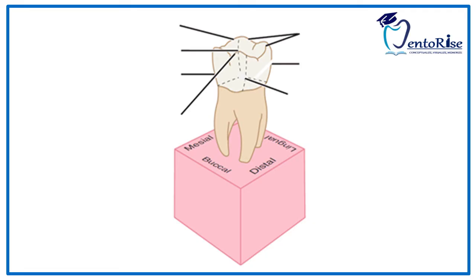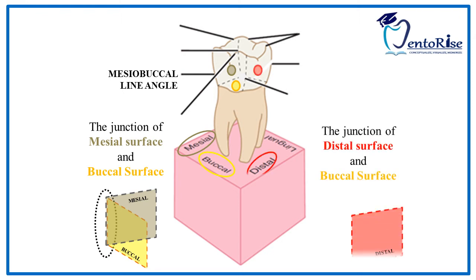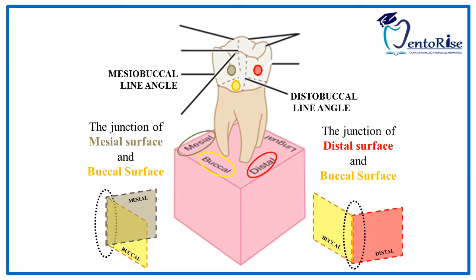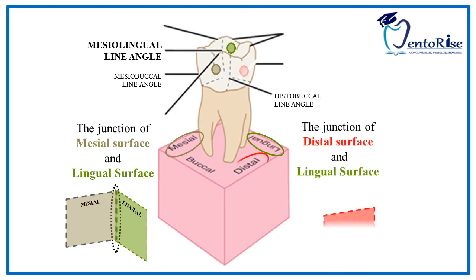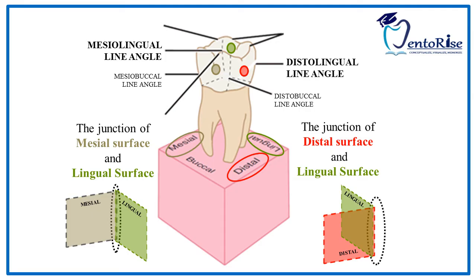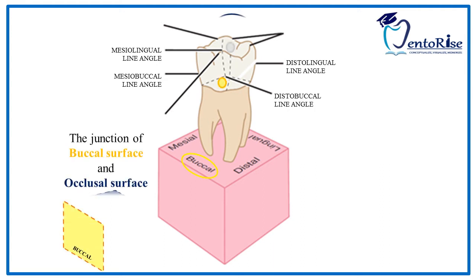On observing the line angles of posterior teeth, the junction of the mesial surface represented in grey and buccal surface represented in yellow forms the mesiobuccal line angle. Similarly, the junction of the distal surface represented in red and buccal surface represented in yellow forms the distobuccal line angle. Junction of the mesial surface represented in grey and the lingual surface represented in green forms the mesiolingual line angle. The junction of the distal surface in red and lingual surface in green forms the distolingual line angle. The junction of the buccal surface in yellow and the occlusal surface in blue forms the bucco-occlusal line angle.